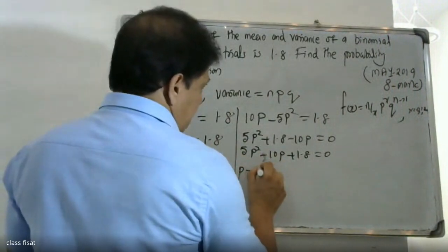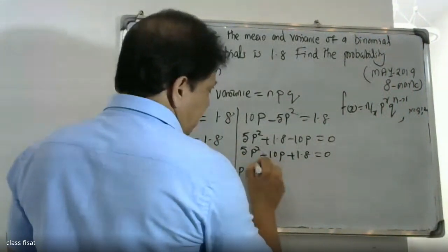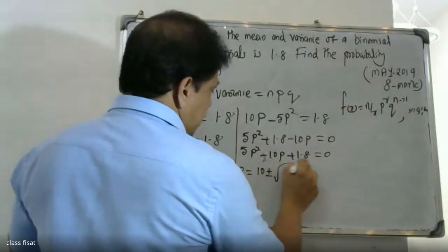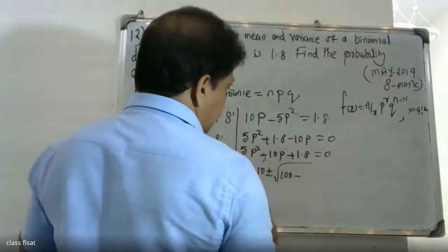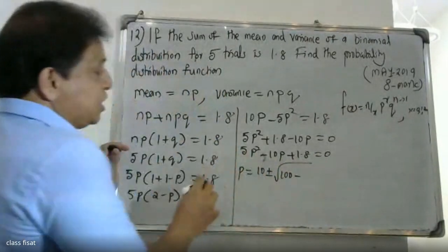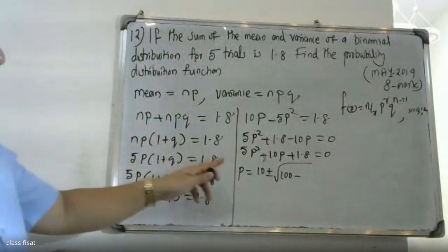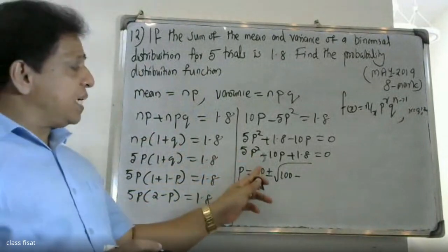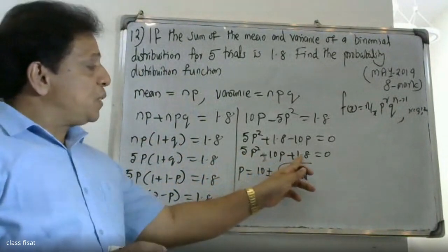Applying the quadratic formula: p = (10 ± √(100 - 4×5×1.8)) / (2×5). Computing the discriminant: 4ac = 4 × 5 × 1.8 = 36. So p = (10 ± √(100 - 36)) / 10 = (10 ± 8) / 10.